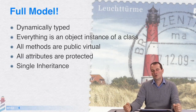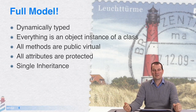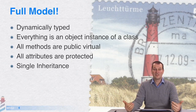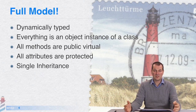Likewise, the object model is summed up on that slide. Everything is dynamically typed. Everything is an object instance of a class. All methods are public virtual. All attributes are protected. And there's single inheritance. There's no boxing, no primitive and non-primitive type, no generic type.